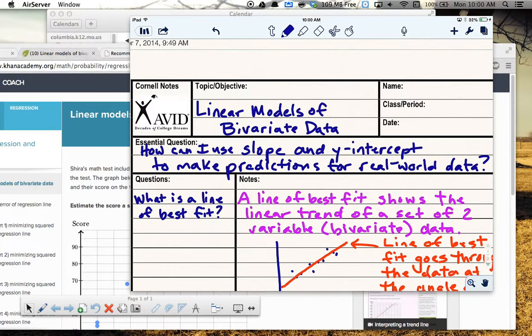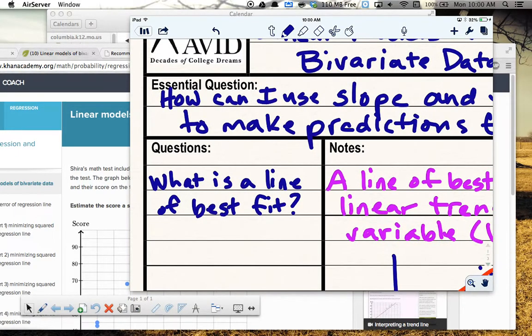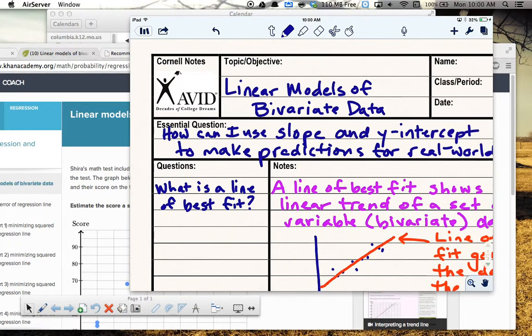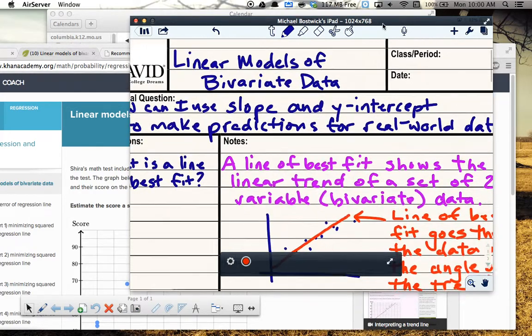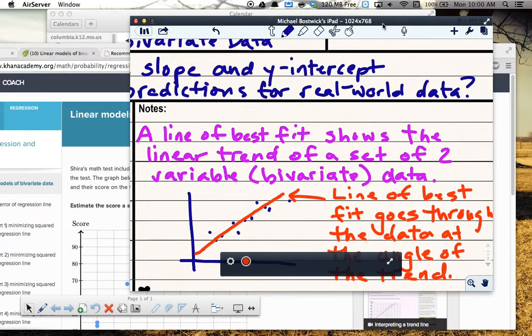And so the first sub-question we're going to look at is what is a line of best fit? Because that's going to be really important to us. All of the data we're going to look at in this topic follows some kind of linear trend. And so that means there's a pattern that you could identify as a straight line. And so a line of best fit shows the linear trend of a set of two variable, and two variable is the same as bivariate data.